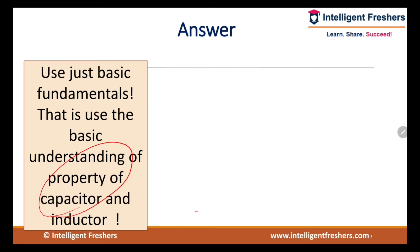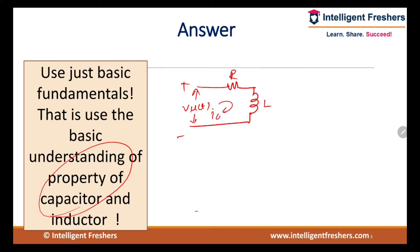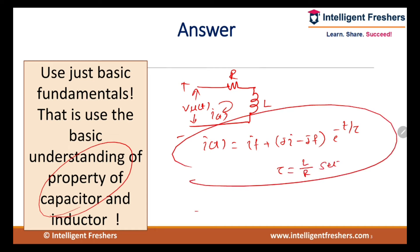Here an inductor is given. We know that for an RL series circuit, if a step input is given, then I(t) is given by: final current plus (initial current minus final current) multiplied by e raised to minus t by tau, where tau equals L by R seconds. You can use this fundamental and then try to solve this question in just two minutes.